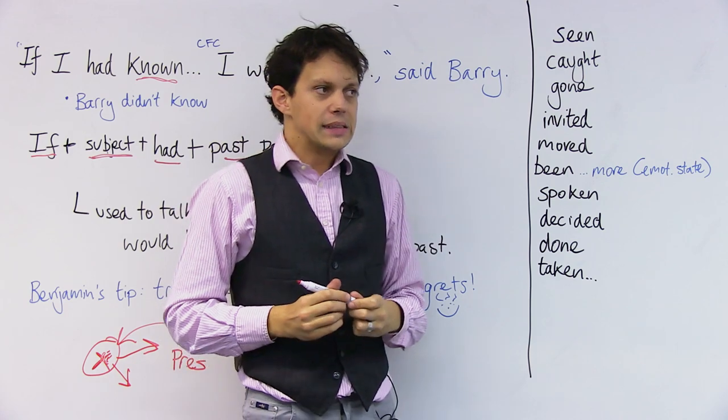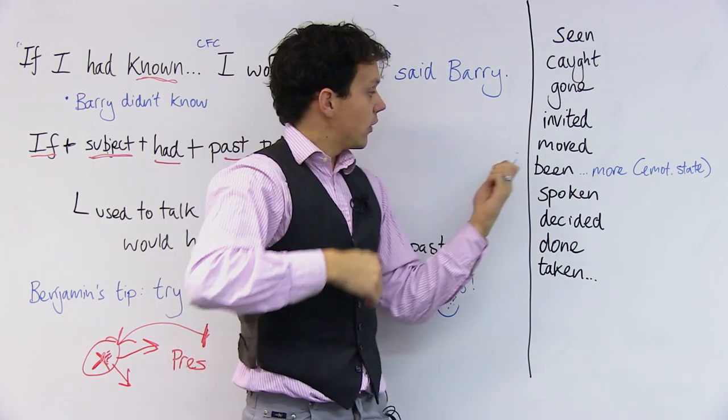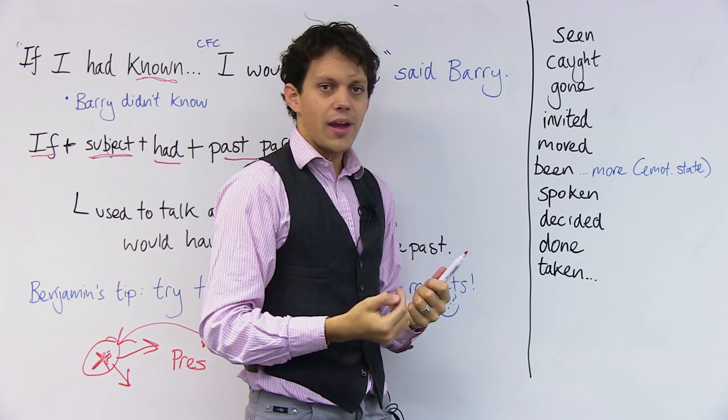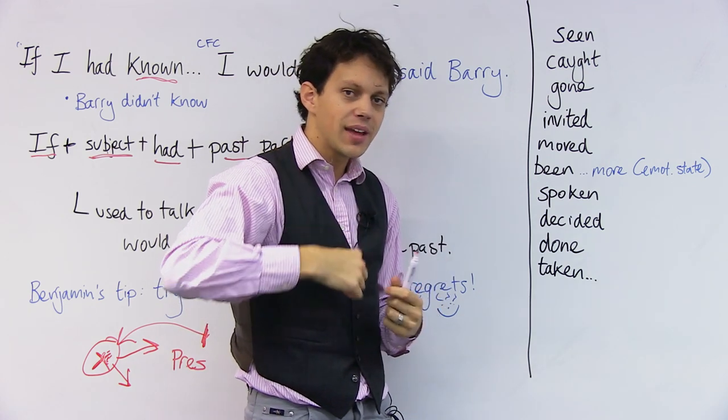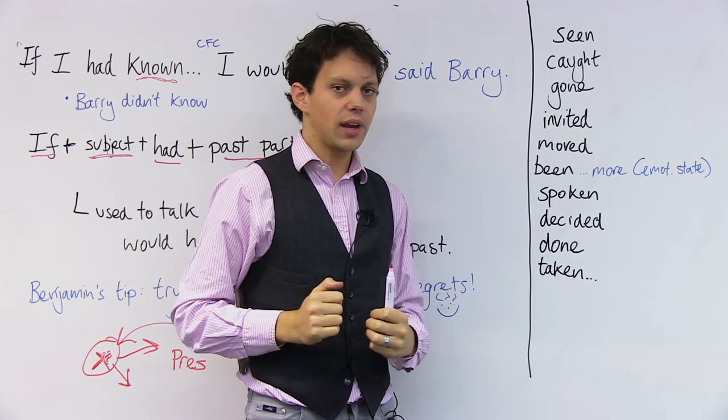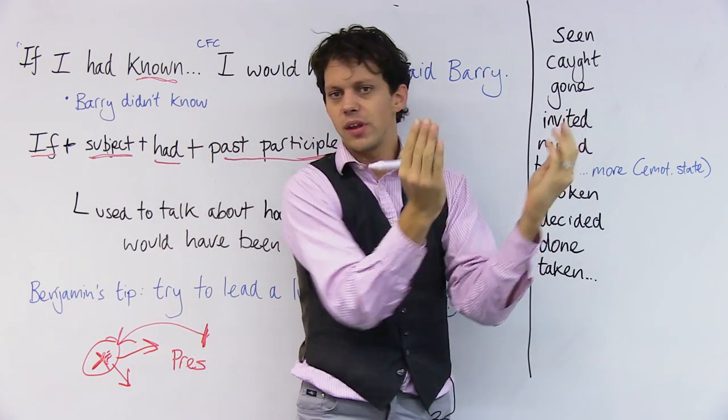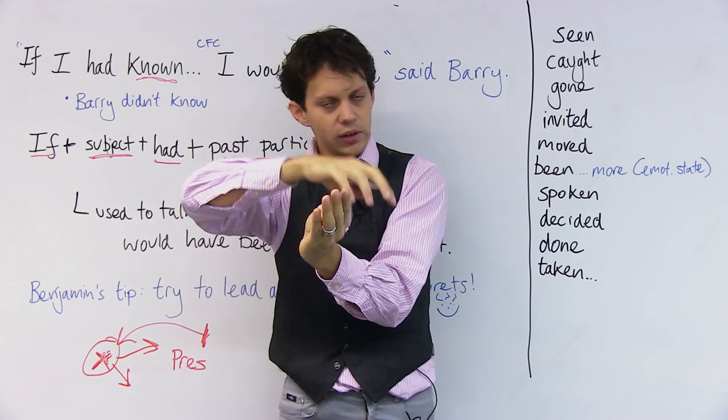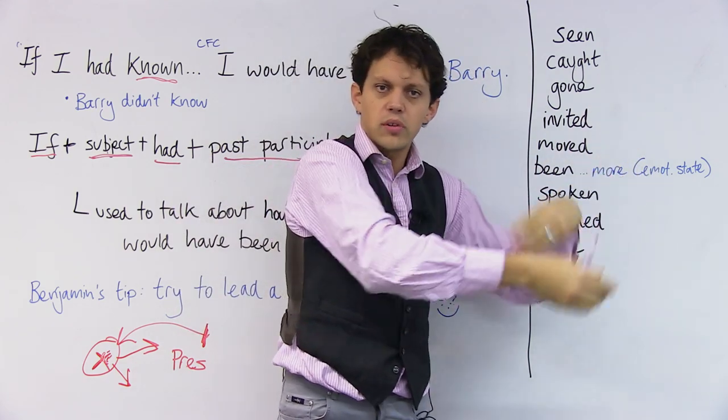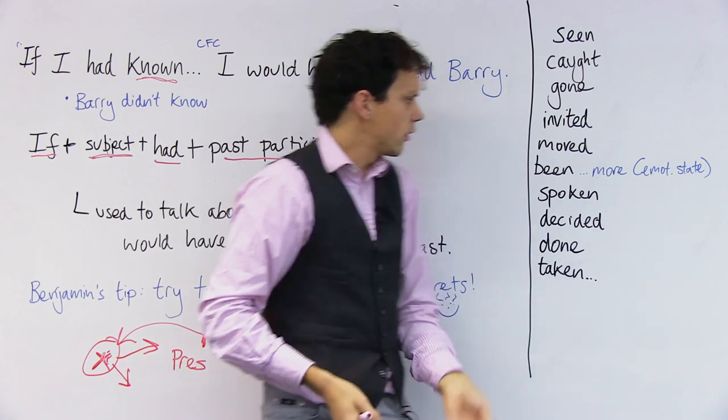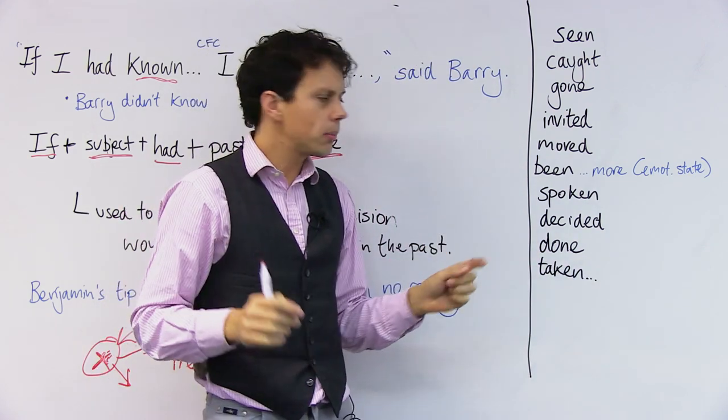Moved. If I had moved to Tokyo, I would have had a very different life. So this works in two parts. If I had, and then our little verb, and then the result, what would have been different. It's not too complicated.